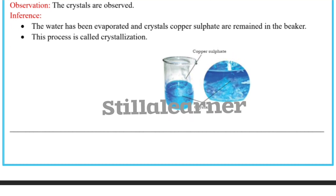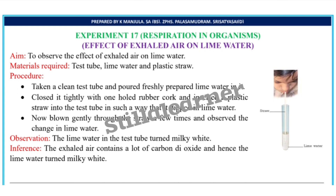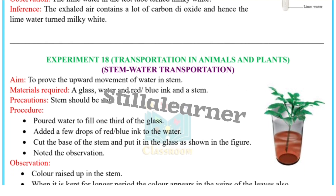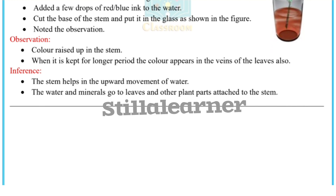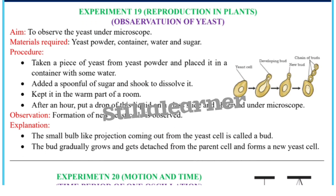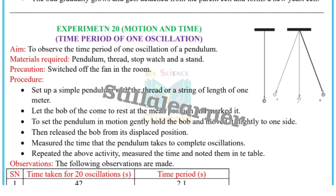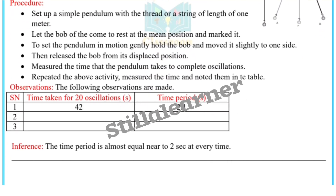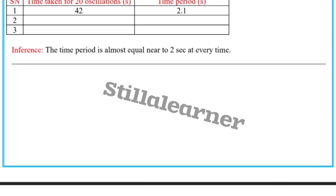Experiment number seventeen is respiration in organisms: effects of exhaled air. Experiment number eighteen is steam water transportation. Experiment number nineteen is reproduction in plants: observation of yeast. Experiment number twenty is time period of one oscillation.